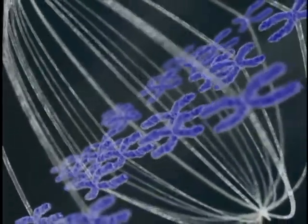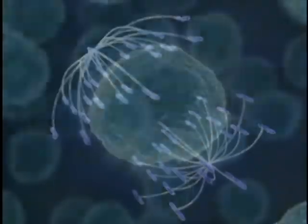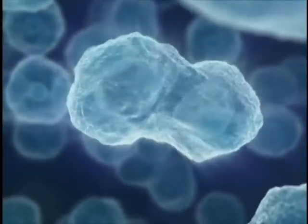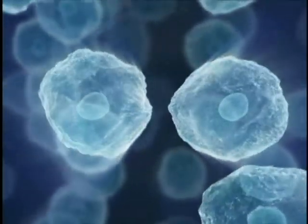If everything is in order, the sister chromatids separate to opposite poles of the cell. The nuclear envelope reforms, and the cell divides into two identical daughter cells.